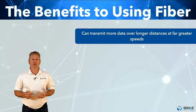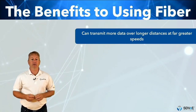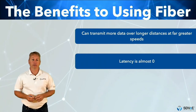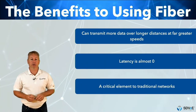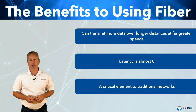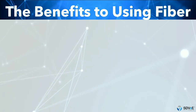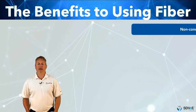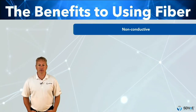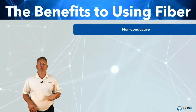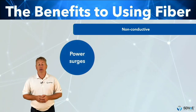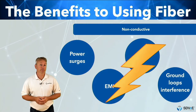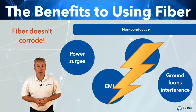With these capabilities, fiber can transmit more data over longer distances and at far greater speeds than any other medium we know of. Just as importantly, the latency between transmitting and receiving that data is almost zero — a critical element to traditional networks as well as voice over IP systems. Unlike copper, fiber has no metallic or electrically conductive components, making it immune to power surges, EMI, RFI, ground loop interference, and lightning strikes. It also won't corrode over time.